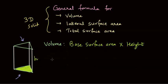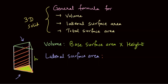For lateral surface area, we look at the perimeter of the base first. Once we find the perimeter, we extend it for the given height. Each side, when pulled up to the given height, contributes its respective surface area, and together they give us the total lateral surface area. So lateral surface area equals perimeter times height.